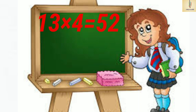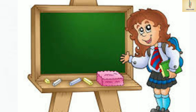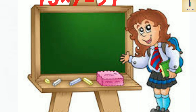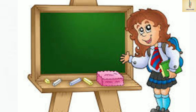13 fours are 52. 13 fives are 65. 13 sixes are 78. 13 sevens are 91. 13 eights are 104.